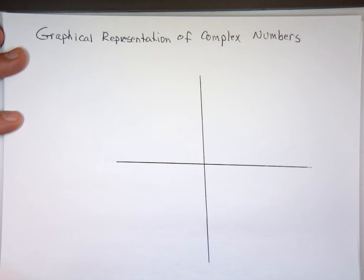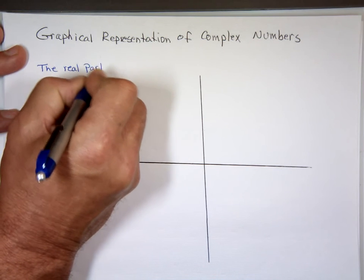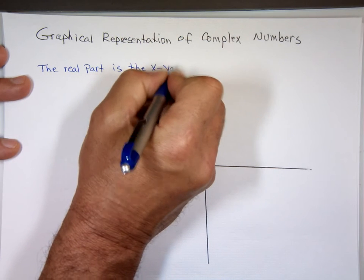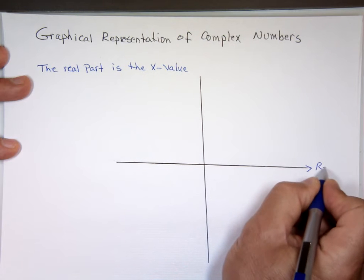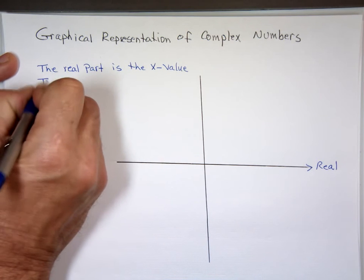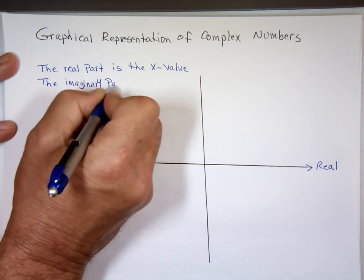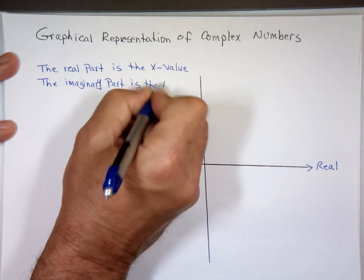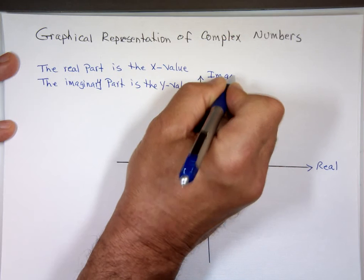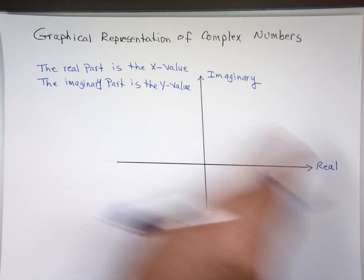So the way the representation is, I'm going to write the real part. When you do it, the real part of the problem is the x value. So this line represents the real part of a complex number. And the imaginary one, the imaginary part is the y value. So the y-axis represents the imaginary. This is the real axis, that's the imaginary axis.